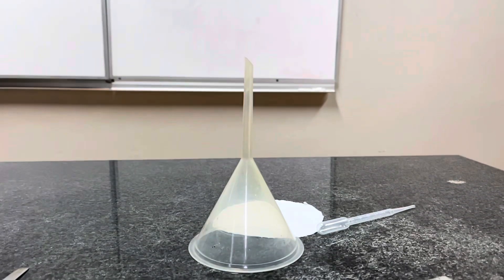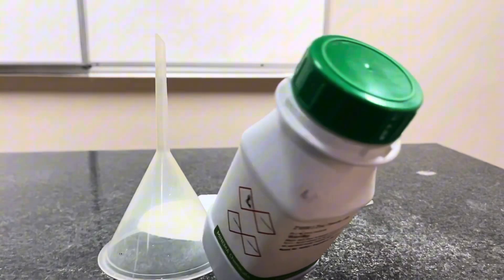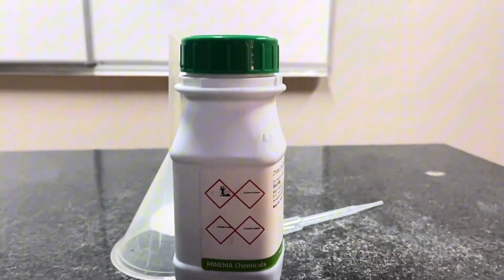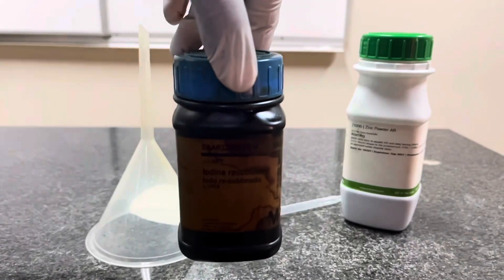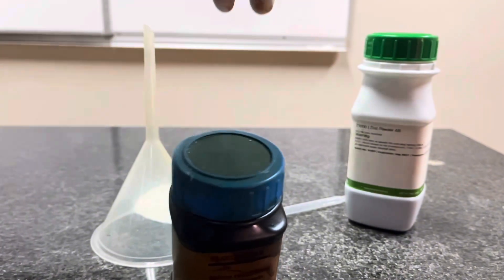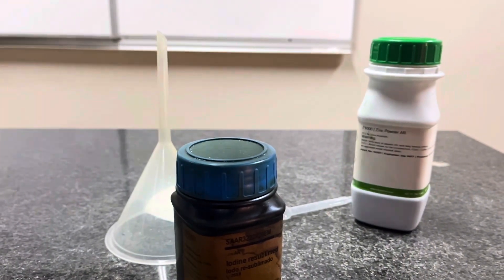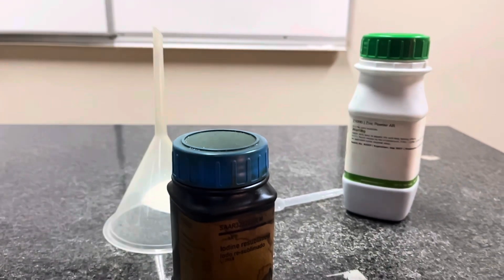In terms of chemicals, we have a bottle of zinc that is in powder form. We also have the iodine that is also in powder form. We also have the ethanol, which is a solvent. It's in liquid form. It's colorless. It looks more like water.